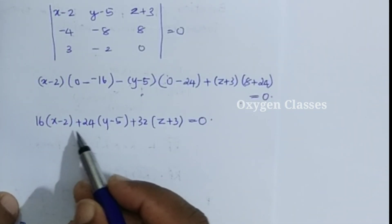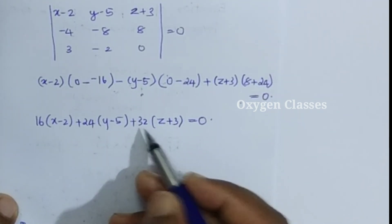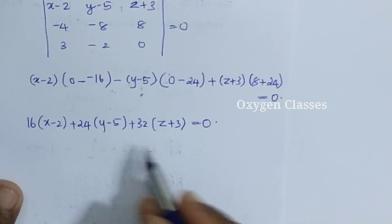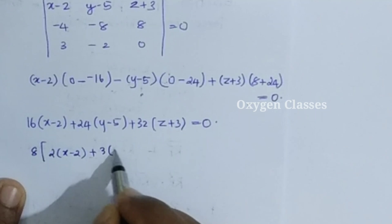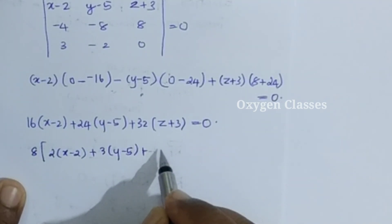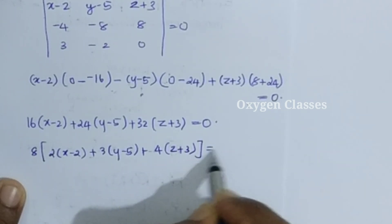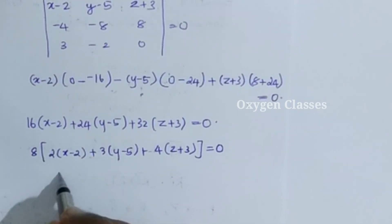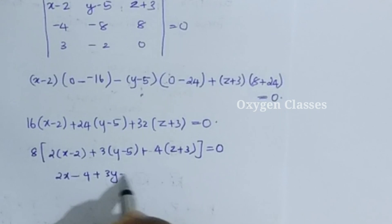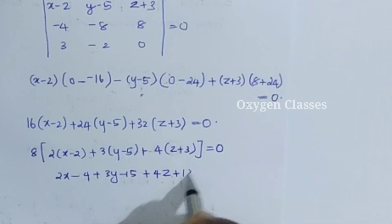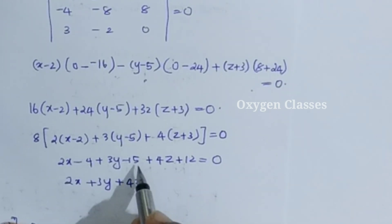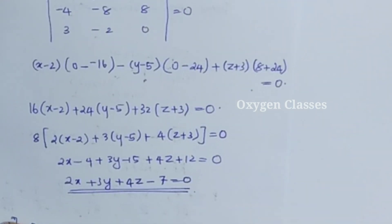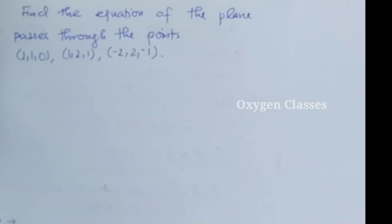Dividing through by 8: 2(x-2) + 3(y-5) + 4(z+3) = 0. Expanding: 2x - 4 + 3y - 15 + 4z + 12 = 0, which gives 2x + 3y + 4z - 7 = 0. This is the Cartesian equation of the given plane.